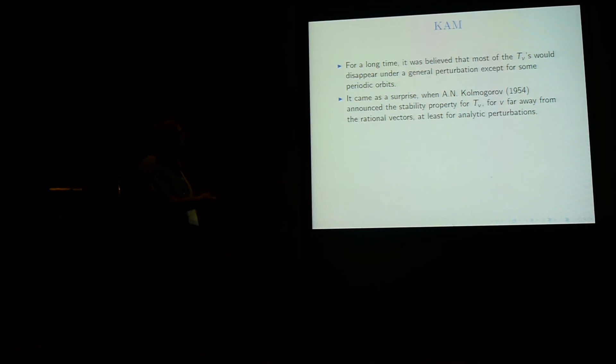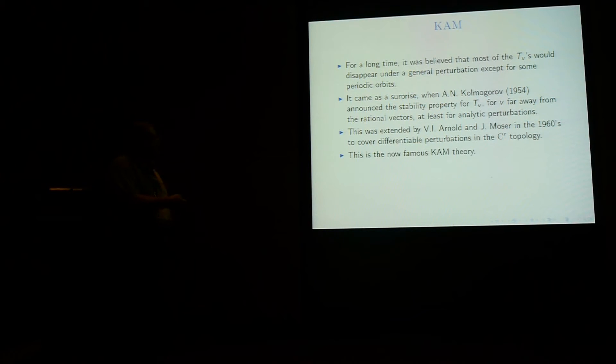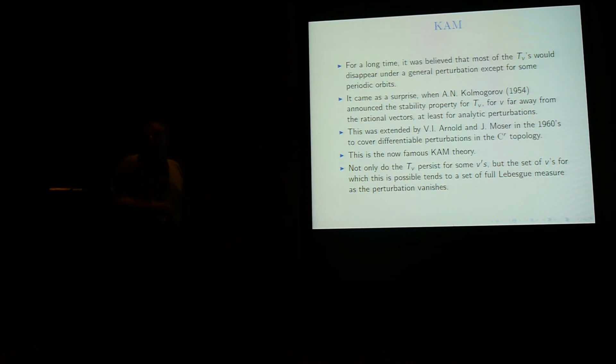So for a long time, it was really believed that most of the Tv would disappear under general perturbation, except for some periodic orbits. So it really came as a surprise when Kolmogorov, in 1954, at the Amsterdam Congress, announced the stability property for the Tori Tv for v far away from the rational vector. He announced it at least for analytic perturbation, and then after that, Arnold and Moser, in the 60s, extended it to smooth perturbations. So this is, of course, the famous KAM theory.